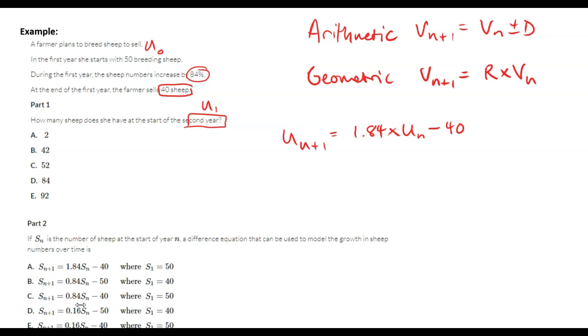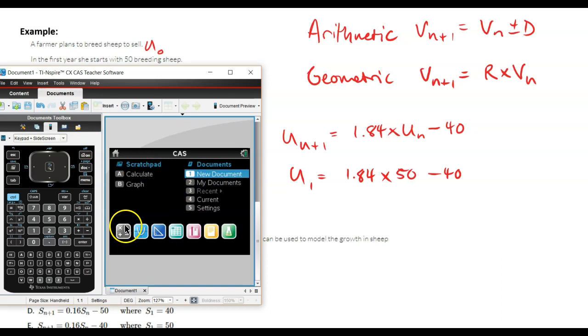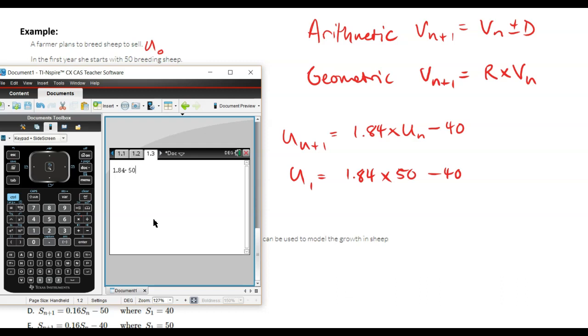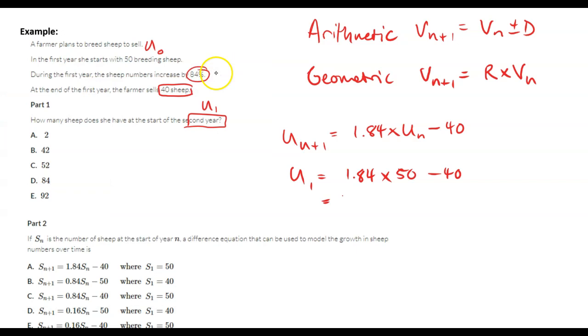We just need to do one step. For u1 we're going to put 1.84 times 50 minus 40. So if I just go 1.84 times 50 minus 40.